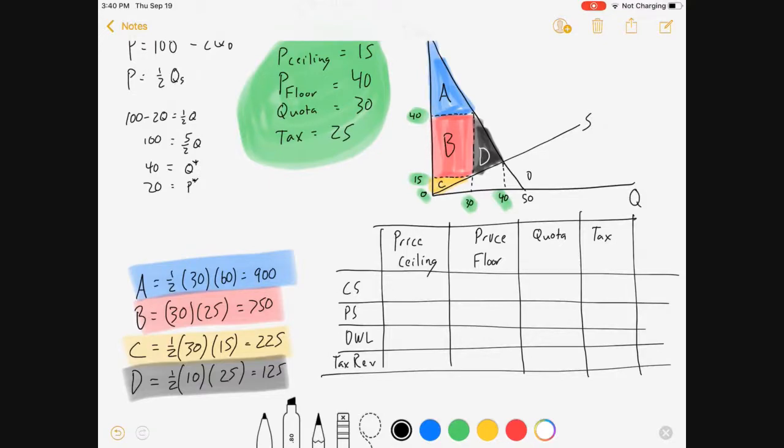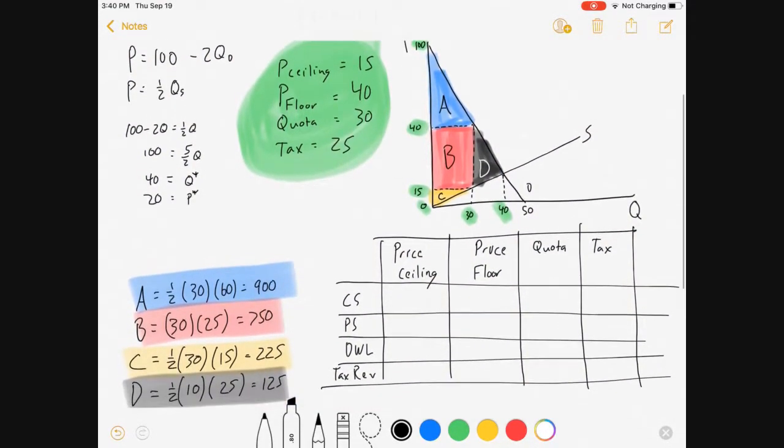All right. So we can get the areas of all of those chunks separately independent of our policies. And now let's look at our policies.